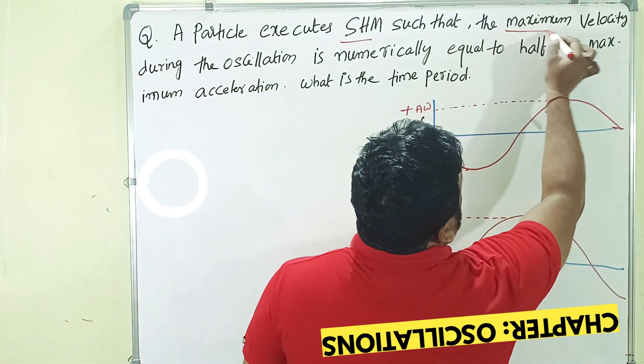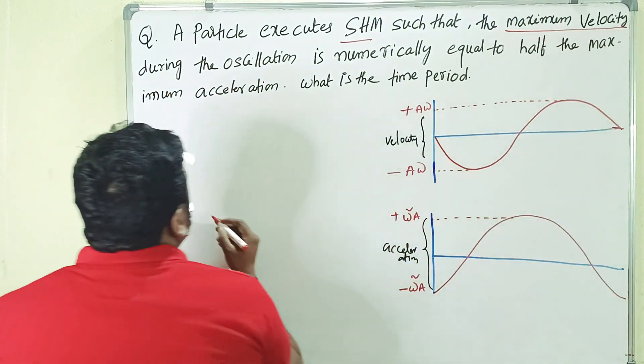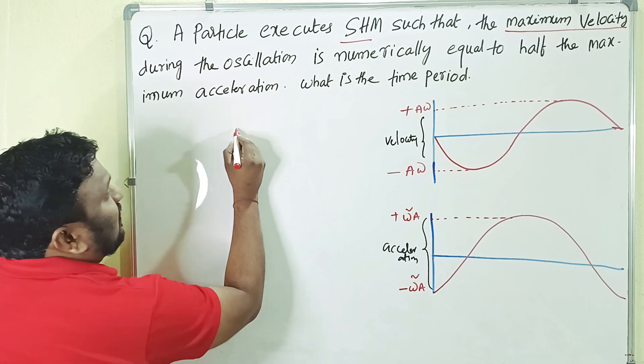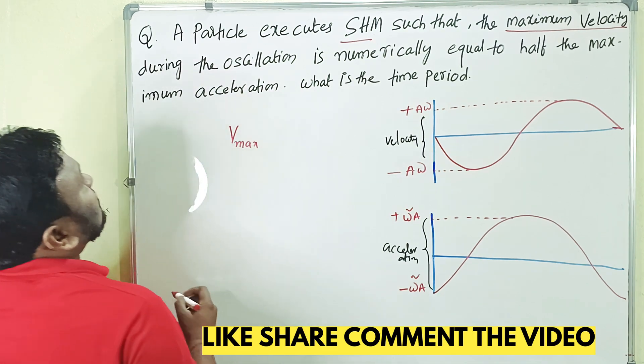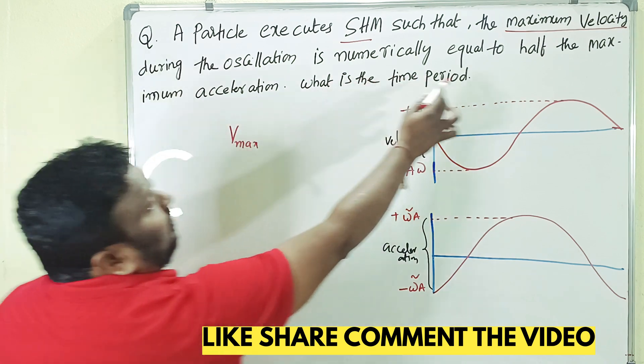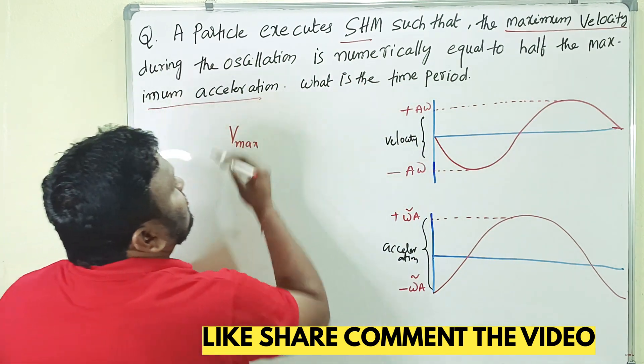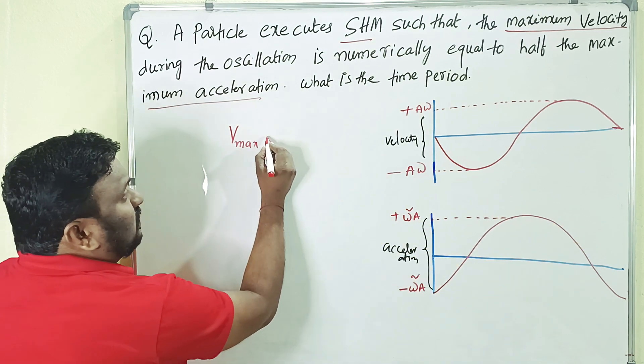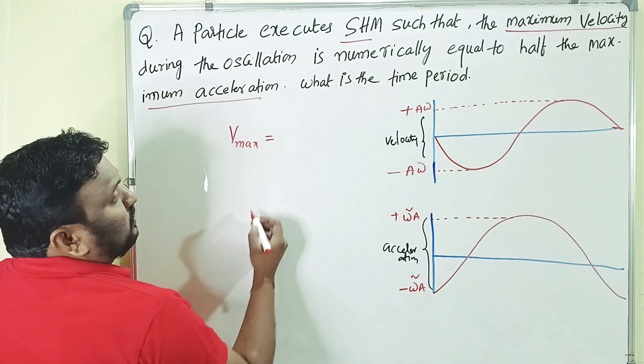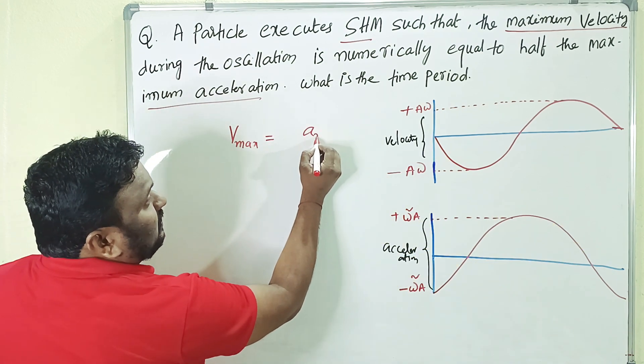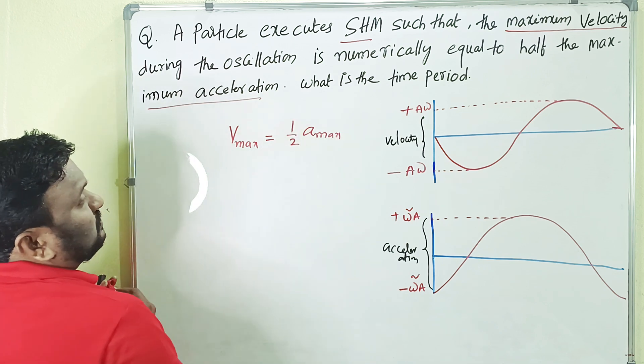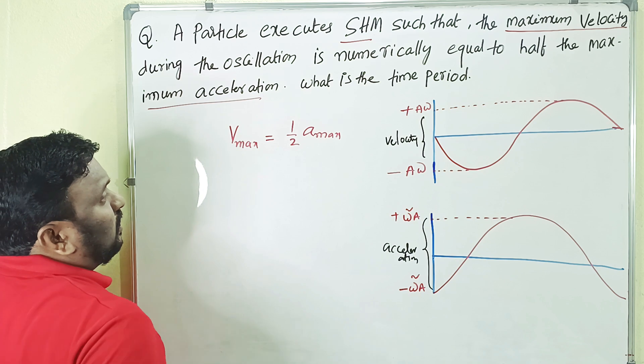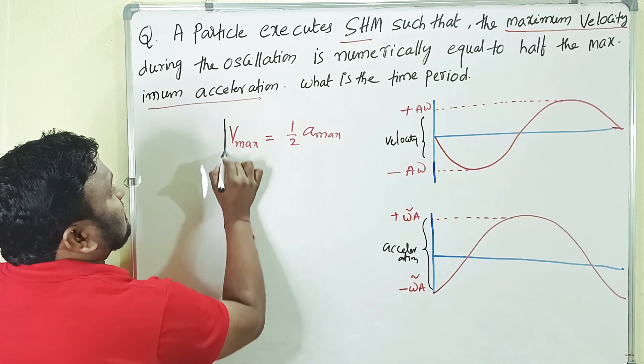The maximum velocity, how we can represent the maximum velocity? V maximum. That should be equals to half of the maximum acceleration. So the given condition is what? V maximum is equals to half of A maximum. This is the given condition.